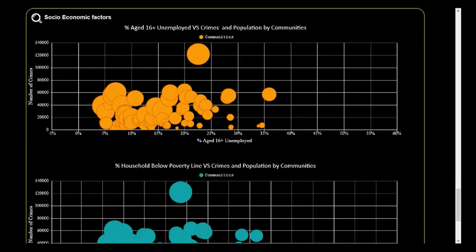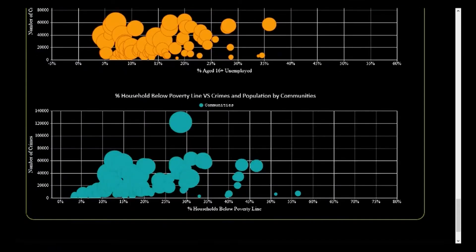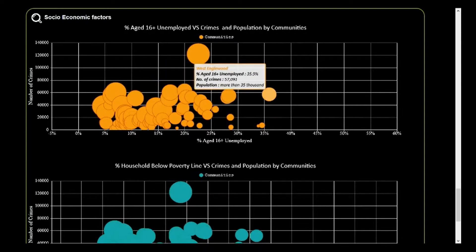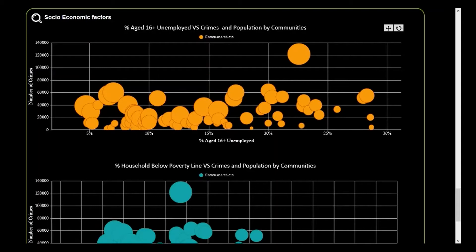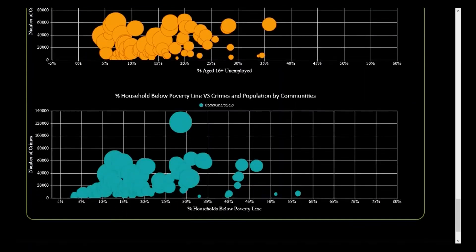There are two factors that we have considered: unemployment and poverty. On the x-axis we have plotted the percentage of unemployed people aged 16 and above, and on the poverty plot we have plotted the percentage of households below the poverty line for each community. The size of each bubble represents the population of each community. By hovering on top of a bubble, we can see the unemployed people and the population of that community. Surprisingly, we found that unemployment doesn't have any major effect on the crime rates in that community.